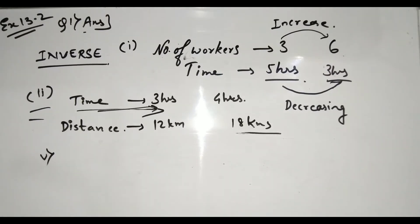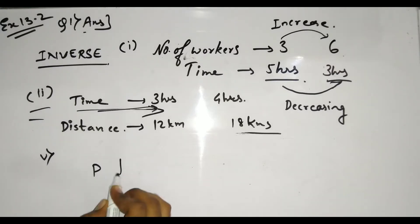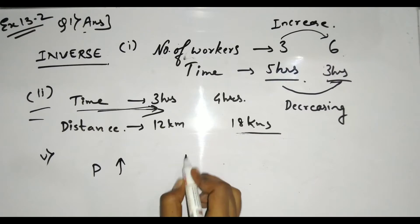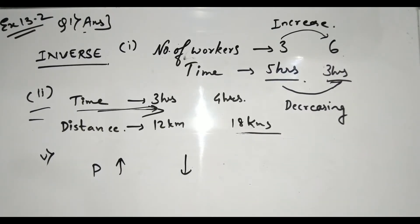The fifth part: the population of a country and the area of land per person. As the population increases, the area of land per person will decrease. One quantity is increasing, one is decreasing — therefore it is inversely proportional.